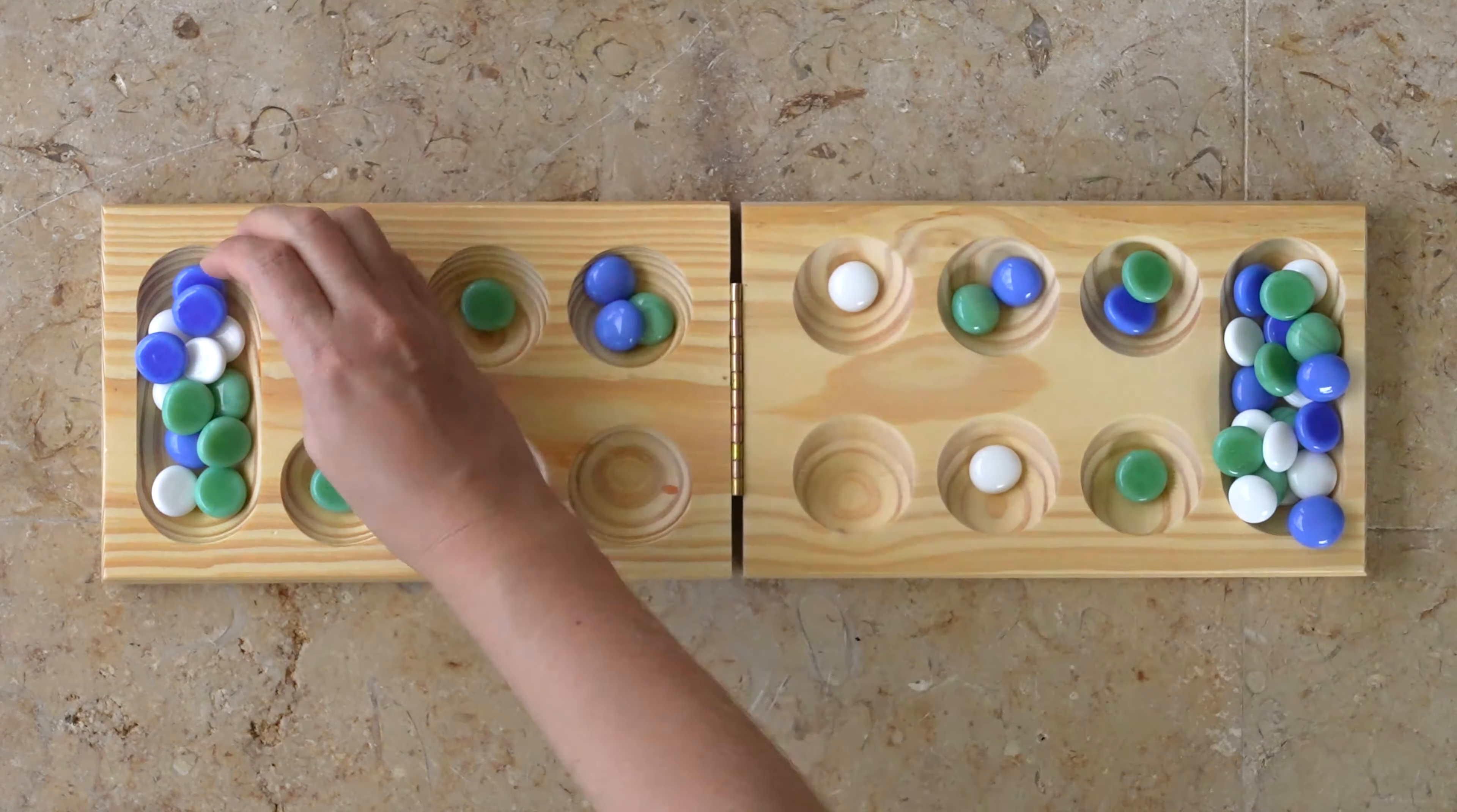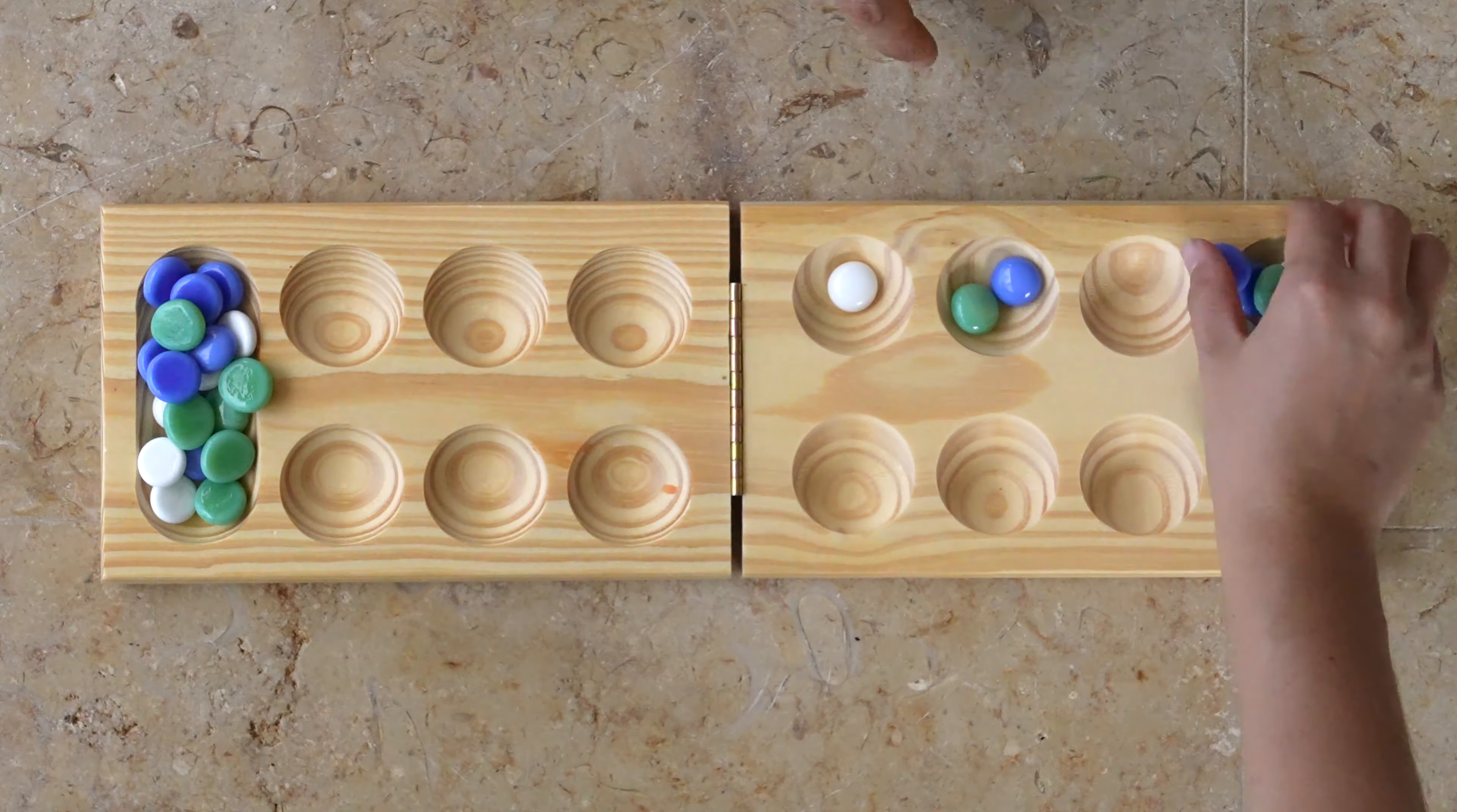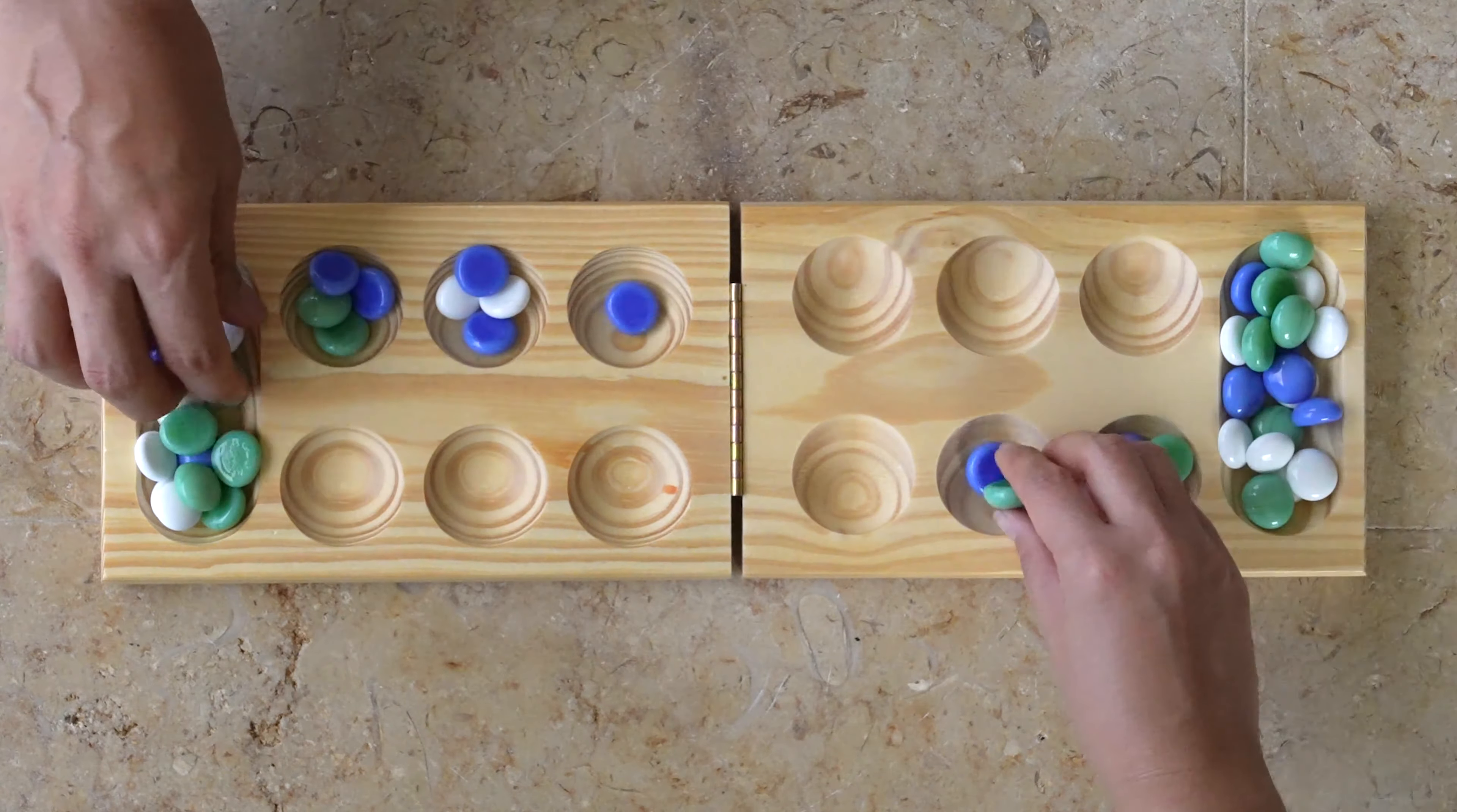The game ends when all 6 cups on one side of the board are empty. The player who still has pieces on their side of the board when the game ends gets to take all those pieces and put them into their Mancala. Whichever player has more pieces in their Mancala is the winner.